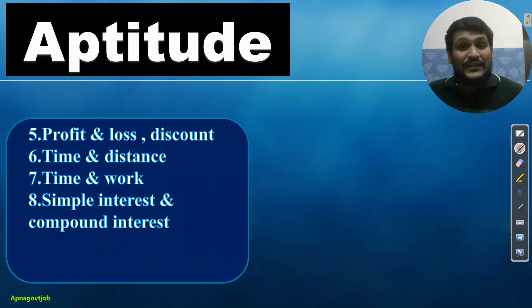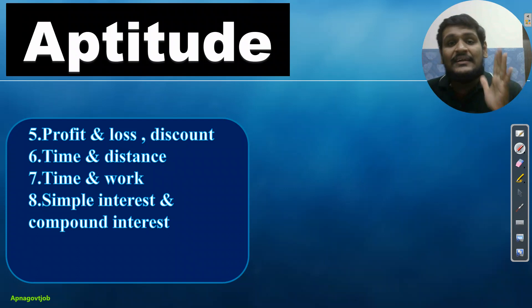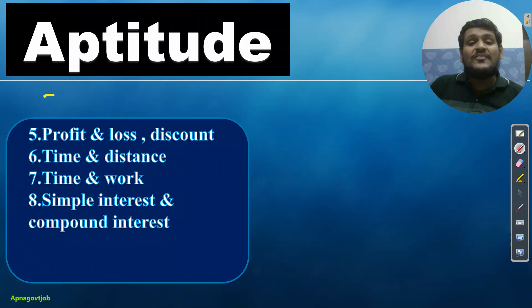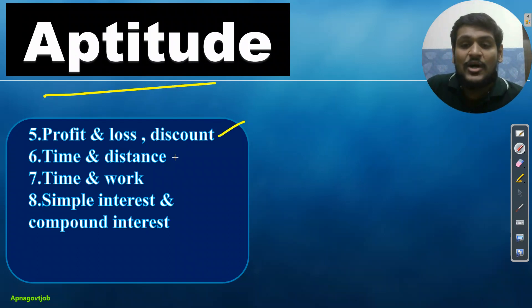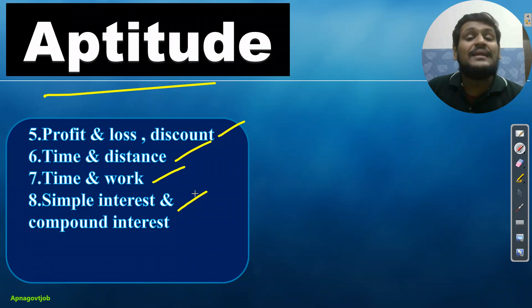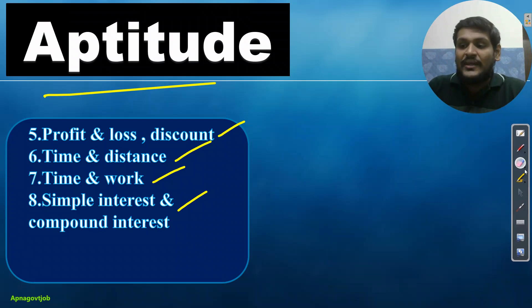First we will discuss the non-technical part, which is common for all branches. For aptitude, you will study: profit, loss and discount; time and distance; time and work; simple interest and compound interest. These are the 4 chapters for the aptitude part in this period.